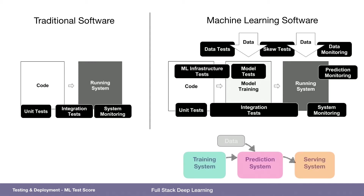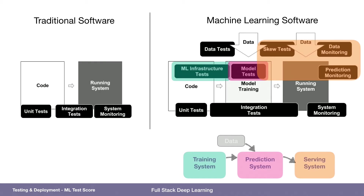If we want to map our system onto this framework, it goes like this: ML infrastructure tests are tests of the training system, model tests are tests of the prediction system, data skew monitoring and prediction monitoring tests are monitoring of the serving system, and data tests are about your data.